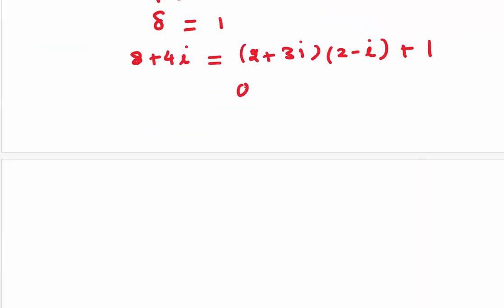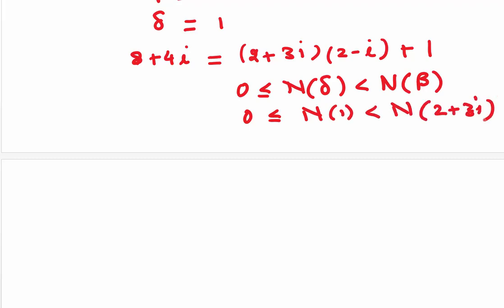Let's check the norm. So, 0 is less than or equal to norm of delta less than norm of eta. 0 is less than or equal to norm of 1 is less than norm of 2 plus 3i. This condition will hold as 0 is less than or equal to 1. Norm of 1 is 1 and that is less than norm of 2 plus 3i which is 13.